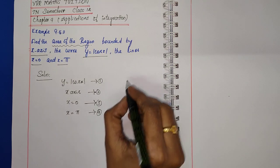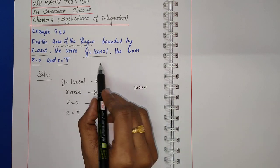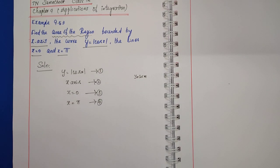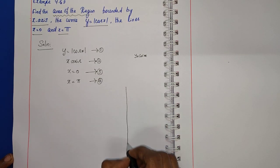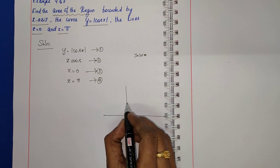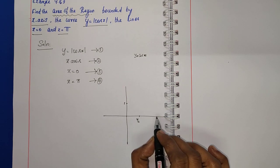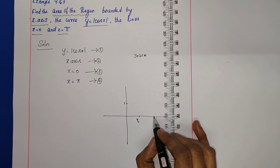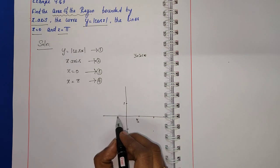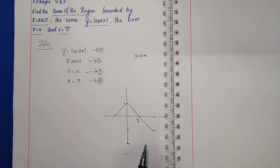First, consider y is equal to cos x. We know that cos 0 is 1, cos 90 degrees (pi by 2) is 0, and cos pi is minus 1. So the graph of y equals cos x moves from 1 down to 0 at pi by 2, and then to minus 1 at pi.